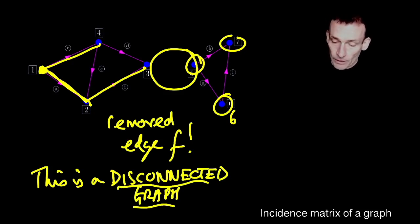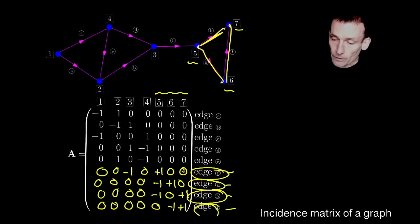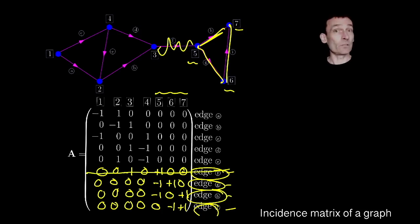And just to finish this lecture, suppose I went back to my incidence matrix here. And I removed edge, and I removed edge F. How do I get the incidence matrix for that? I just delete this row. Simple as that. There it is.